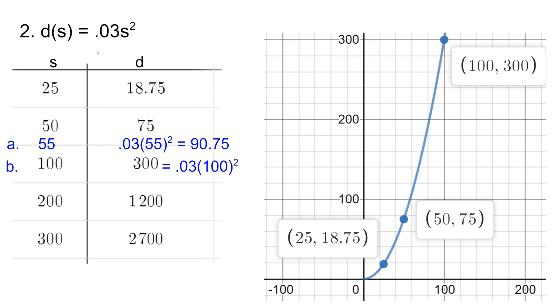And then question C says if the average car is about 16 feet long, how many car lengths should you have between you and the car in front of you? Well, if we know it takes 300 feet to stop at 100 miles per hour and the average car is 16 feet, then dividing we can determine we would need 18.75 car lengths between us and the car in front of us if we're driving at 100 miles per hour.